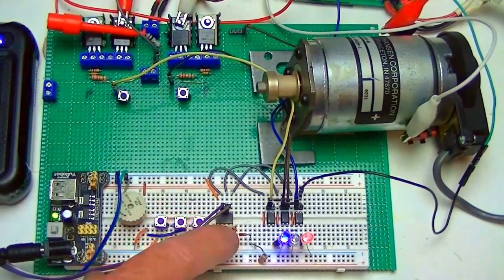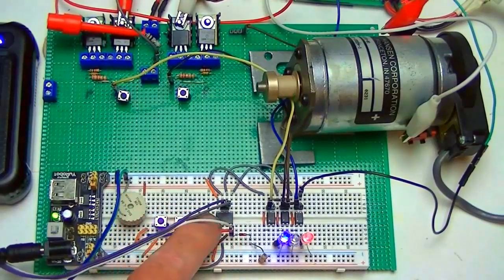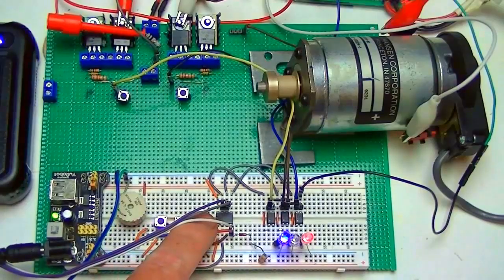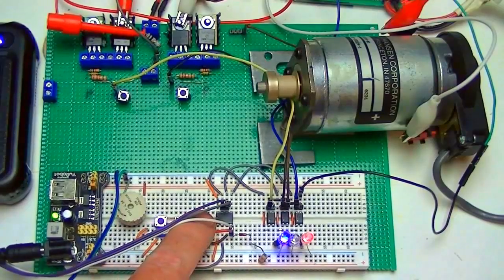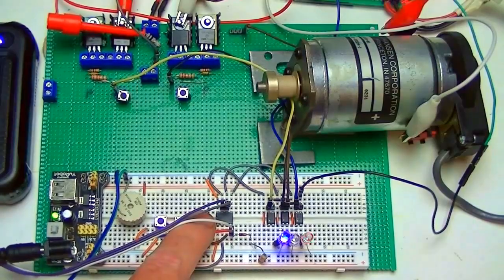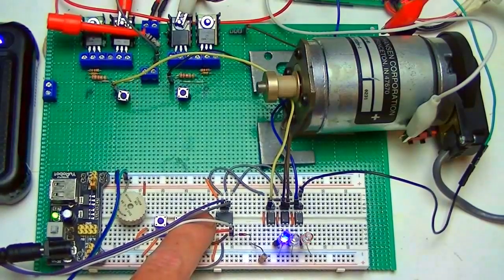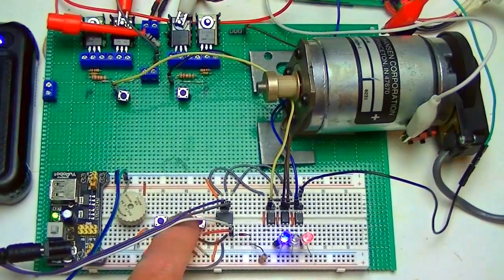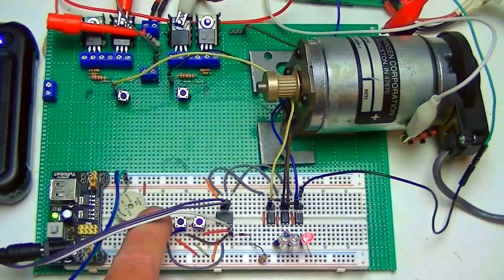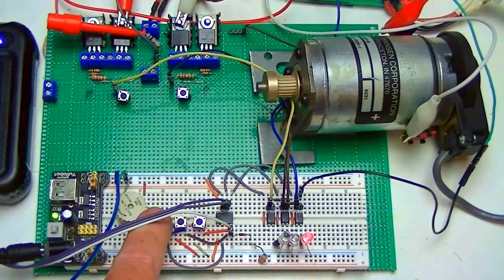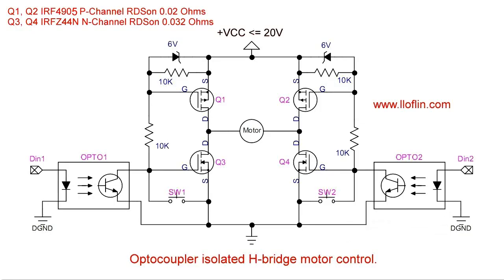Watch what happens though when I just cut the power off, and disregard the braking action in the H-bridge. It just runs down, and quits spinning eventually. Alright.